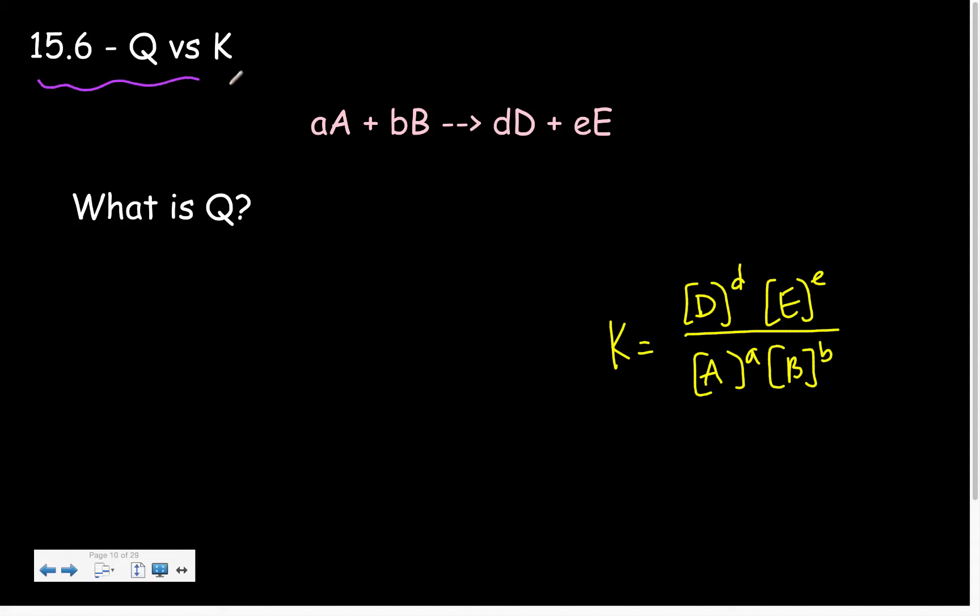Hello AP Chemistry and welcome to section 15.6 where we talk about Q versus K. So K, equilibrium constant. And this is our equilibrium expression where it's our products raised to their respective coefficients over the reactants raised to their respective coefficients.